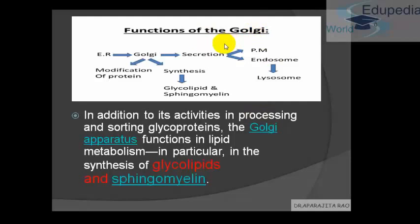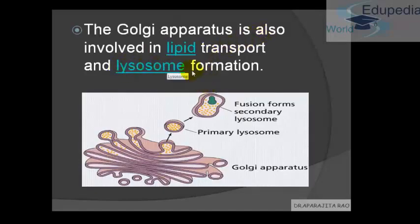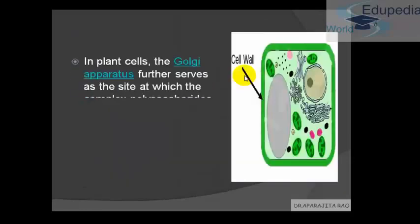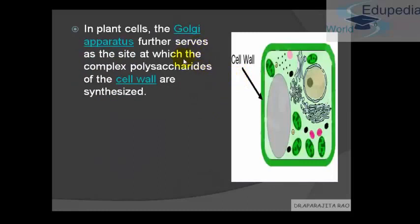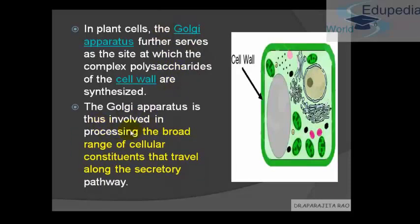The function of the Golgi can be summarized as follows: the endoplasmic reticulum moves proteins to the Golgi, secretion takes place, and the final substance goes to the plasma membrane or forms an endosome and goes into the lysosome. The Golgi can either modify the protein or synthesize glycolipids and sphingomyelins. The Golgi apparatus is also involved in lipid transport and lysosome formation. In plant cells, the Golgi apparatus further serves as a site where the complex polysaccharides of the cell wall are synthesized — polysaccharides we know are very important in cell wall structure.